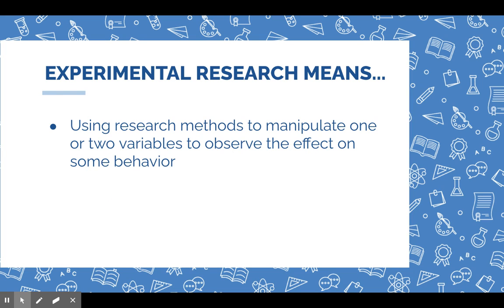The second part of this module is all about experiments. Experimental research is different from surveys and other methods because with experiments you are actually manipulating things — you are in charge of the data you are controlling. With a survey you are relying on the other person, but with an experiment you are really manipulating things to observe some effect on behavior.